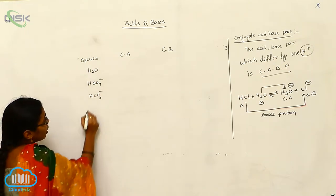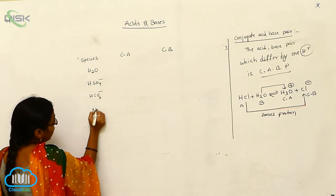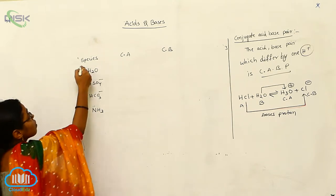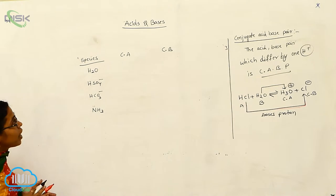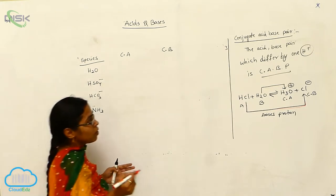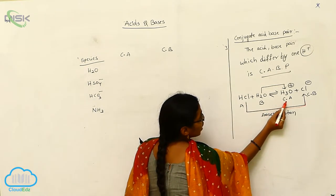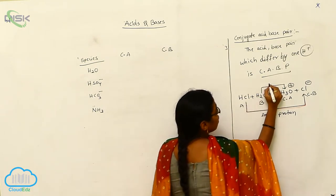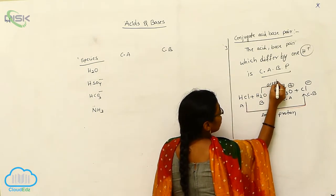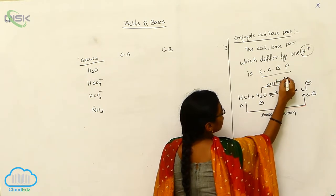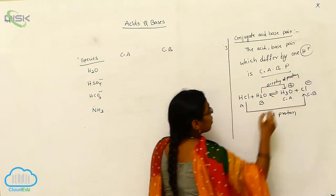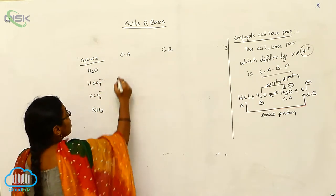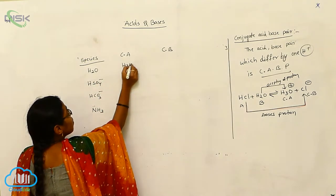Here we have HCO3 minus and ammonia NH3. I want to explain what is the conjugate acid and what is the conjugate base. Conjugate acid always comes from the accepting of a proton. So for H2O, the conjugate acid is H3O plus.